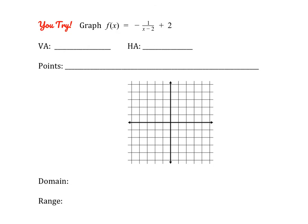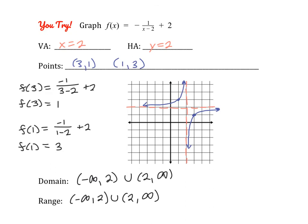At this point, please pause the video and give this one a try on your own. When you're ready to check your answers, just hit play. The vertical asymptote is at x equals 2 and the horizontal asymptote is at y equals 2, shifting the graph right 2 and up 2. Nice points to use are f of 3, which gives 1, and f of 1, which gives 3. The domain is everything except 2, and the range is also everything except 2.